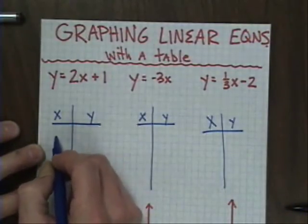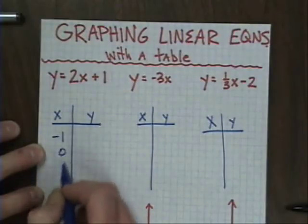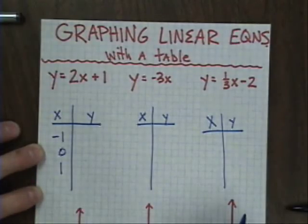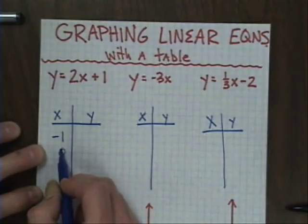So I'm going to choose my three favorites: negative 1, 0, and 1. I always like to include a 0 because they're easy. I like to include negatives and positives to make sure I hit all my possibilities.